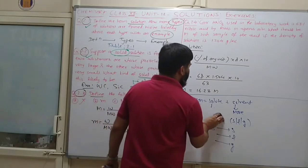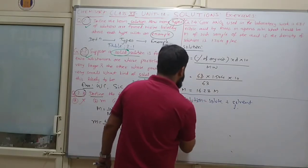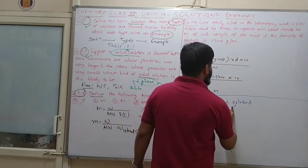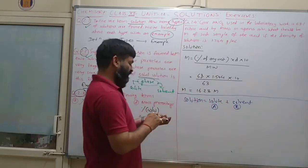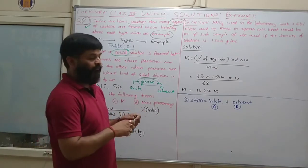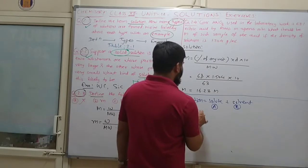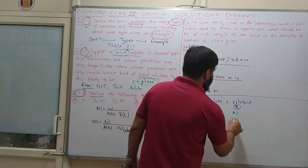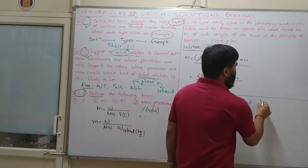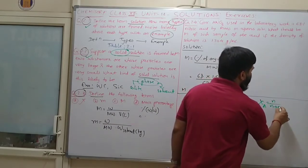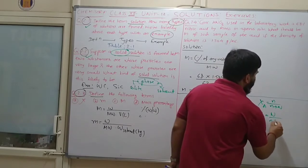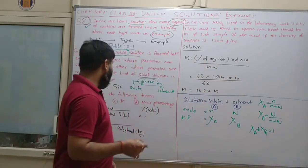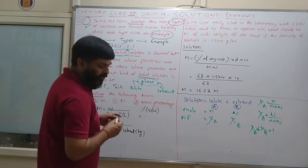For mole fraction, solute is represented as A and solvent as B, with moles as small n. Mole fraction chi_A equals n_A divided by (n_A + n_B). Similarly chi_B equals n_B divided by (n_A + n_B). And chi_A plus chi_B equals 1.